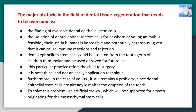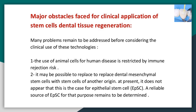To solve this problem, use of an artificial crown supported by teeth originating from mesenchymal stem cells is proposed. Major obstacles for clinical application include: the use of animal cells for human disease is restricted by immune rejection risk; it may be possible to replace dental mesenchymal stem cells with stem cells of another origin, but this does not appear to be the case for epithelial stem cells (EPSCs) — a reliable source of EPSCs for this purpose remains to be determined. Engineering three-dimensional matrices with composition similar to the organ being reconstructed, plus the addition of growth factors, might facilitate transplantation and differentiation of stem cells.